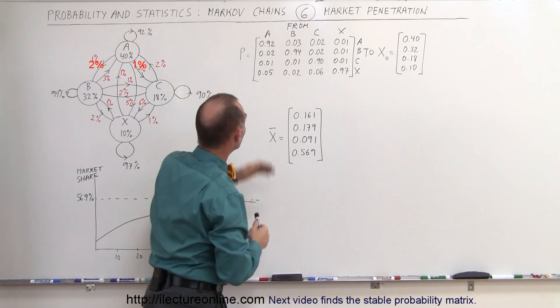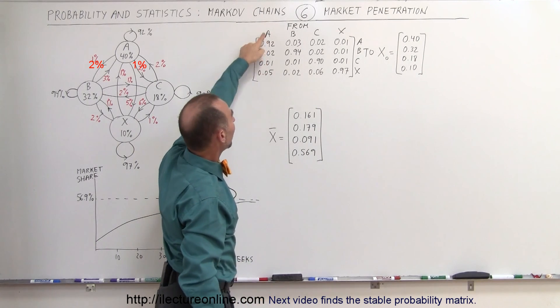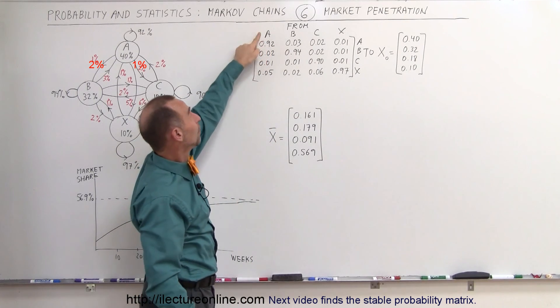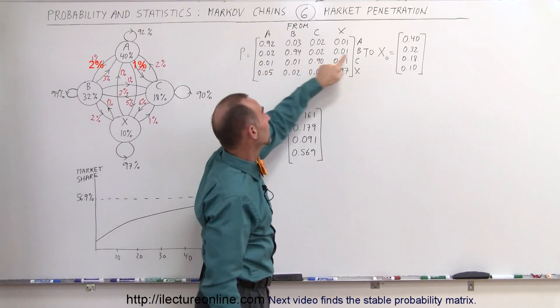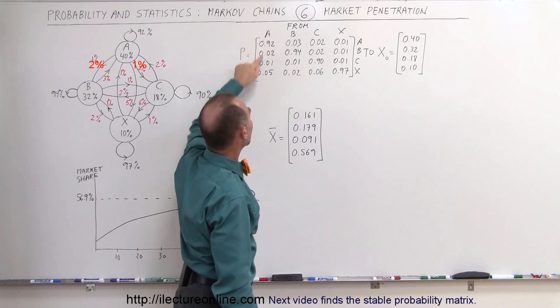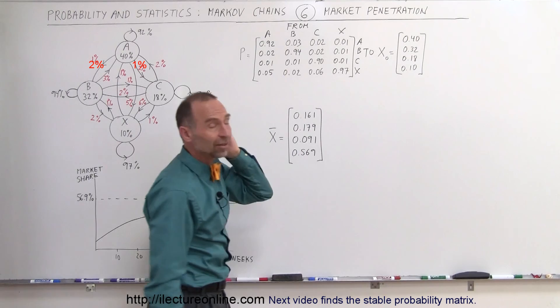If we take a vertical column, for example brand A, brand A will go to brand A 92% of the time, brand A will go to brand B 2% of the time, brand A will go to brand C 1% of the time, and brand A will go to brand X 5% of the time.